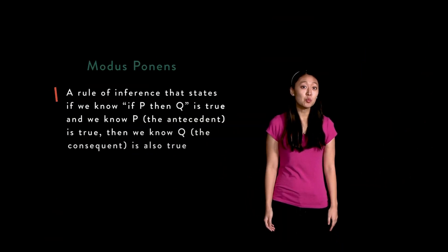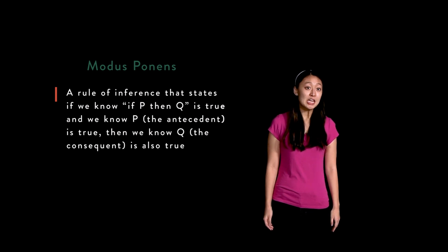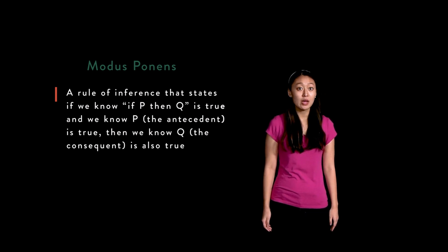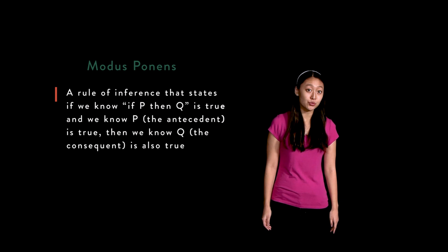Modus ponens is a rule of inference which states that if we know a hypothetical 'if p then q' is true, and we know the antecedent p is true, then we can infer the truth of the consequent q.